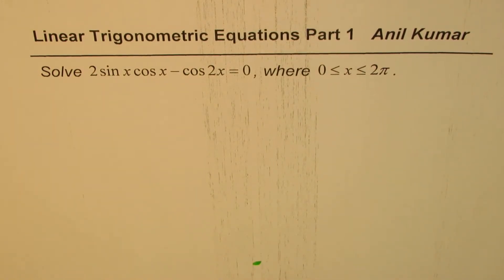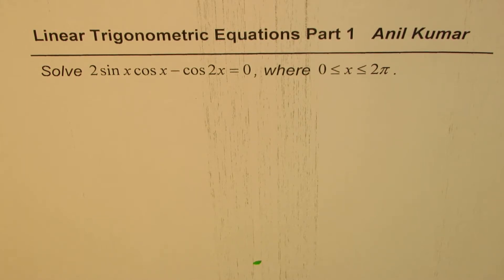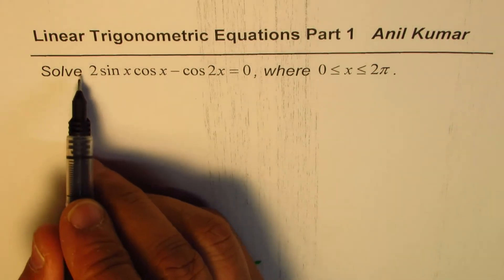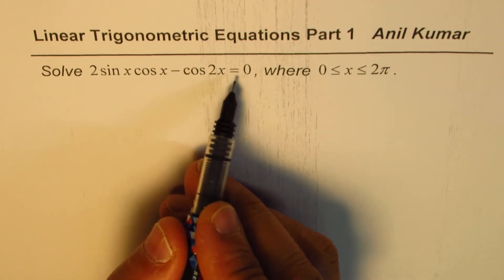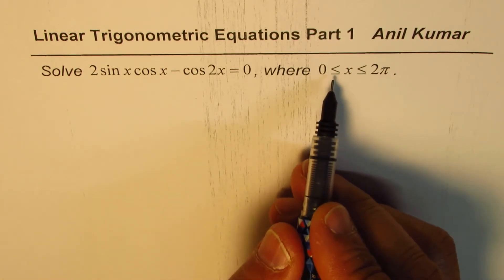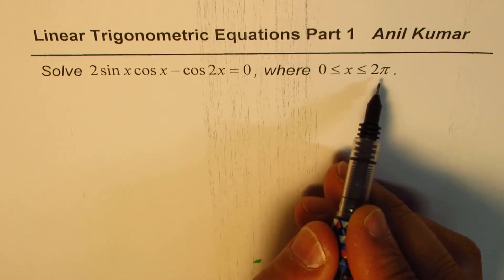I'm Anil Kumar. We are discussing linear trigonometric equations, and in this part one I have taken relatively simple examples. However, this equation is a challenge question in this series. The question is to solve 2 sin x cos x minus cos 2x = 0, where x is greater than or equal to 0 and less than or equal to π.